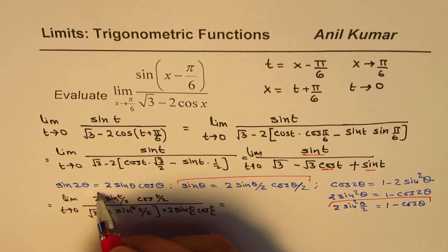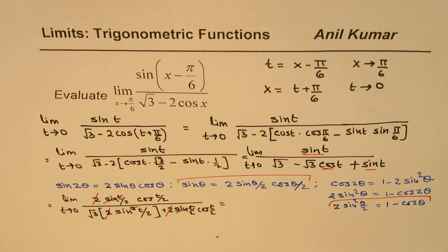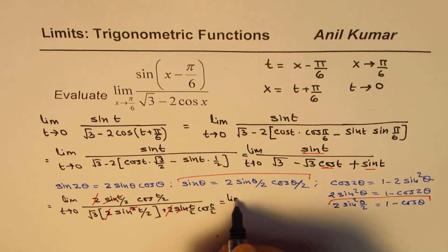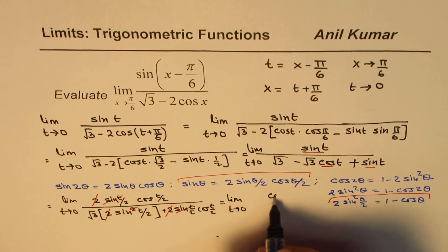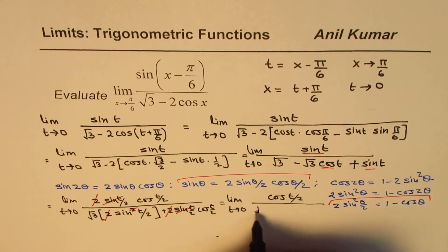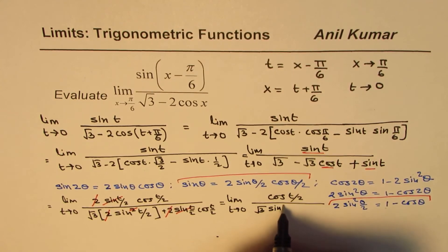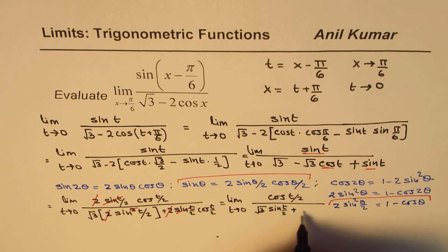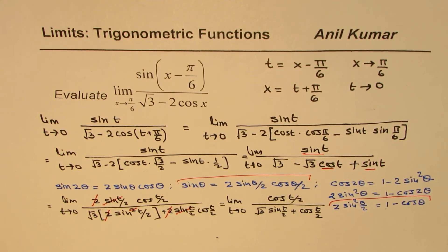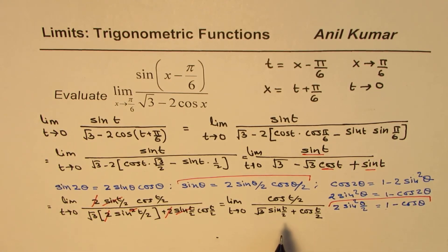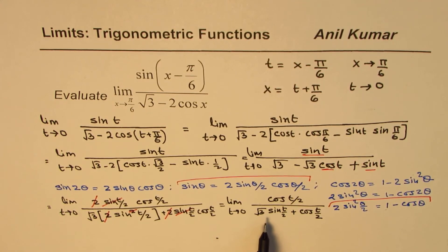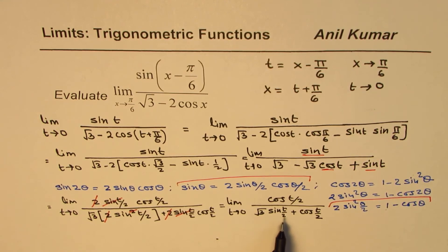Cancelling the common factor sin(t/2) and the factor of 2, the limit simplifies to: limit t→0 of cos(t/2) divided by [√3 sin(t/2) + cos(t/2)].